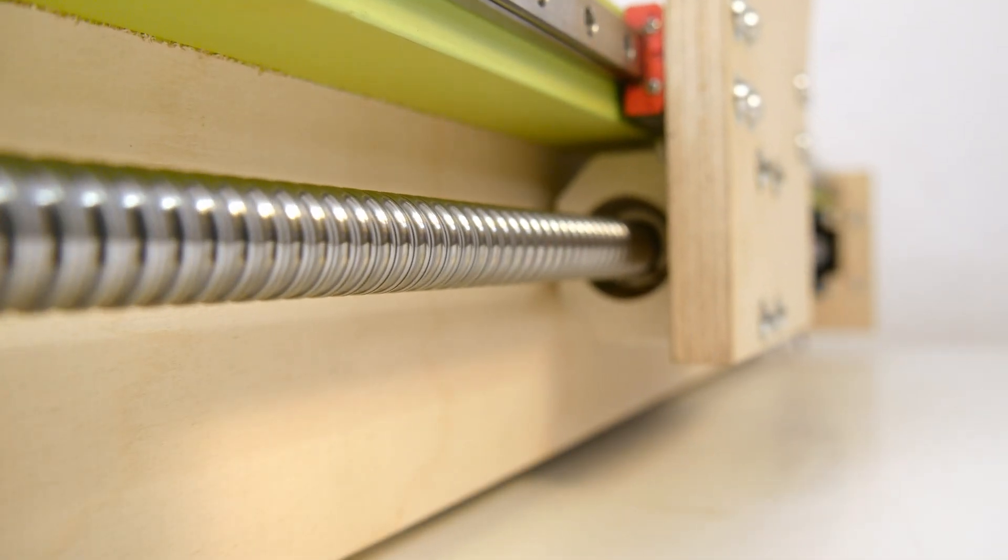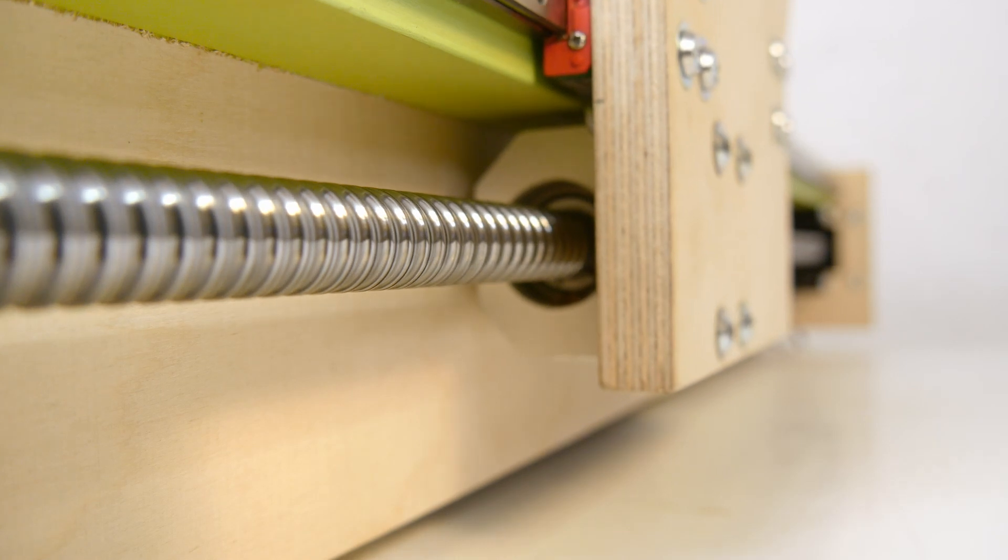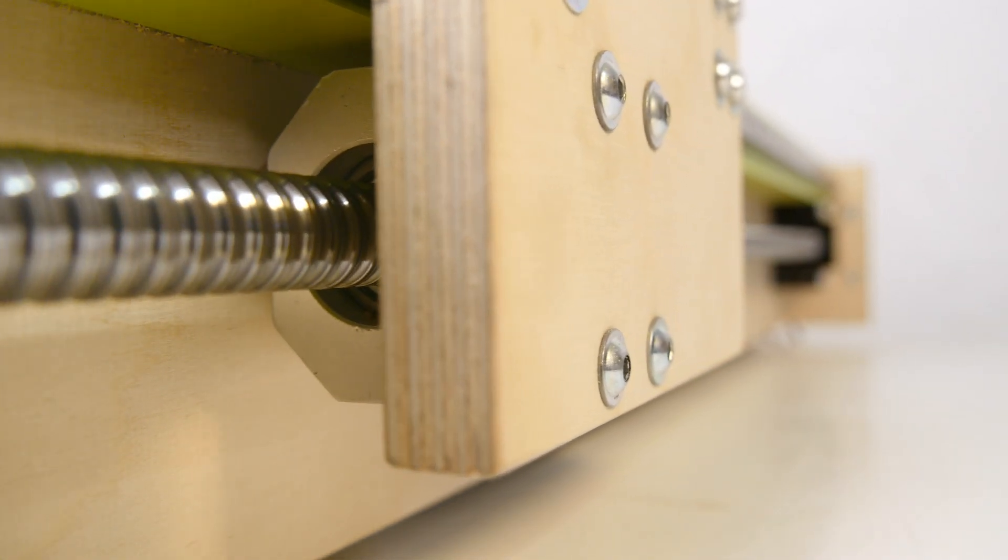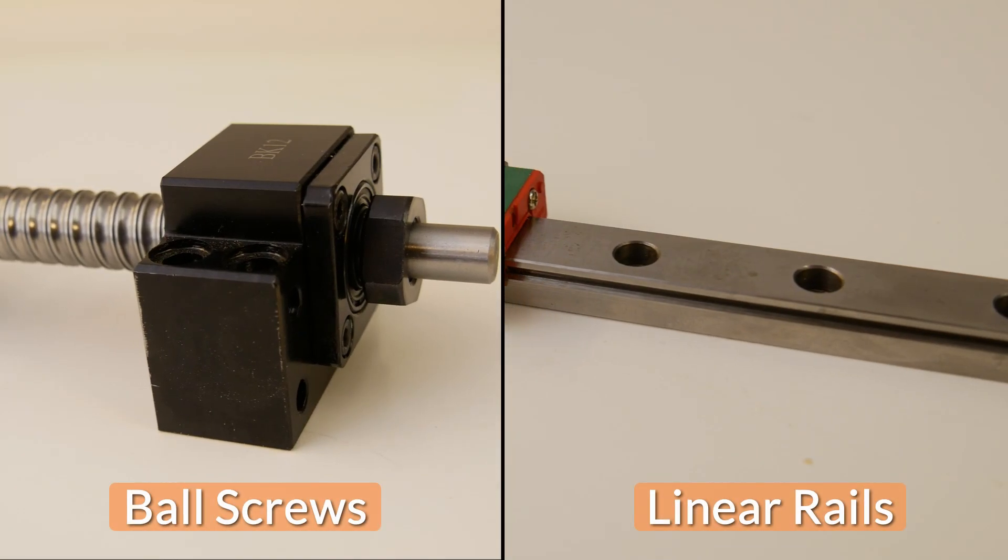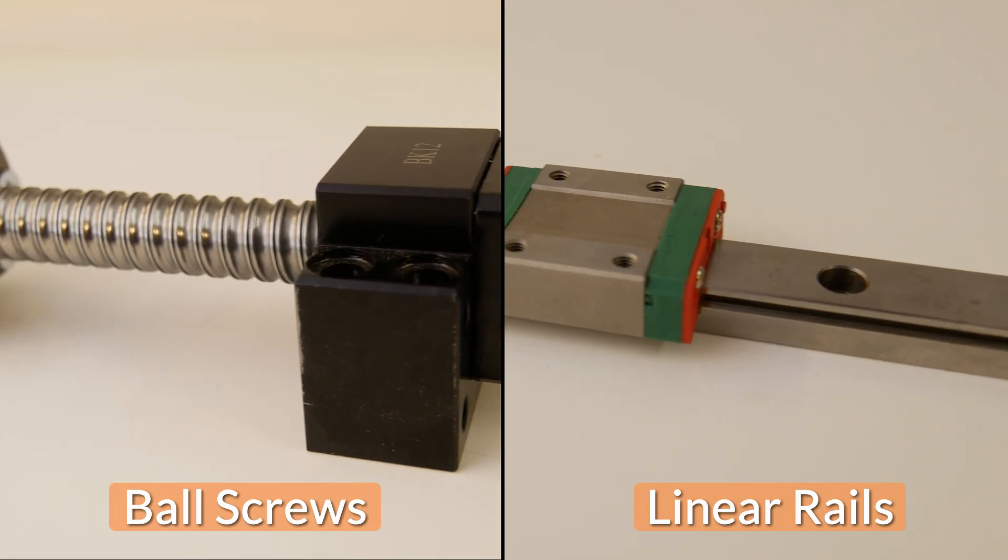Even though I wanted to keep the costs down, the goal was to build a machine where all moving parts were going to run on ball bearings. I therefore used linear rail guides with carriages that run on ball bearings and ball screws.